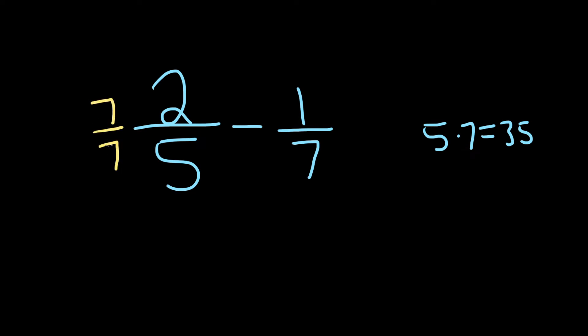Note that these cancel, so you're really multiplying by 1, and that's why you're allowed to do this. Over here, you have a 7, and you're trying to get to 35. So you're missing the 5. So again, you just multiply by 5 over 5.